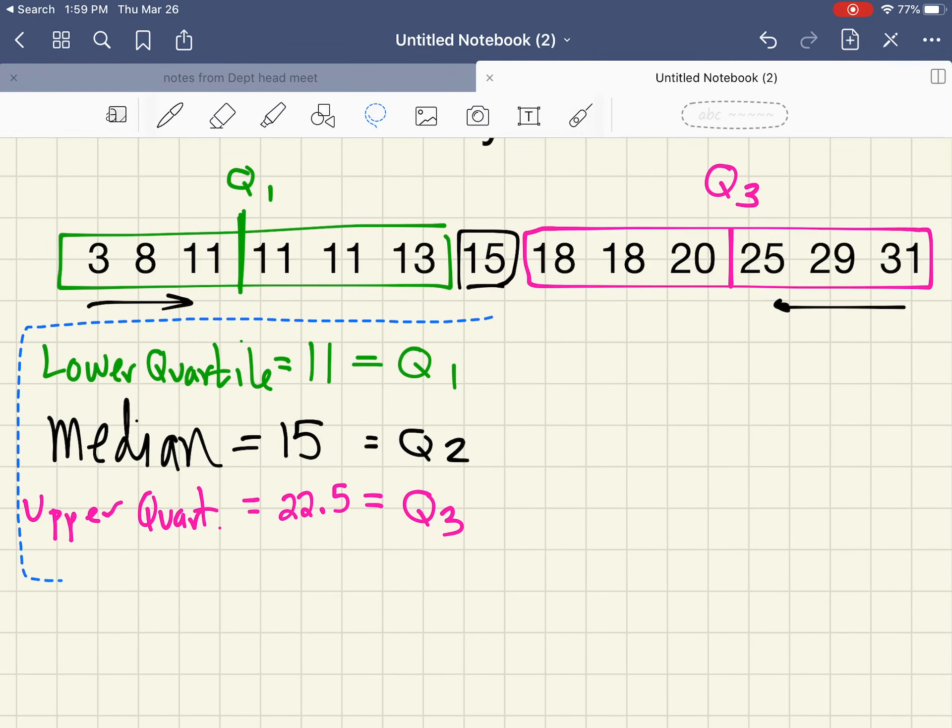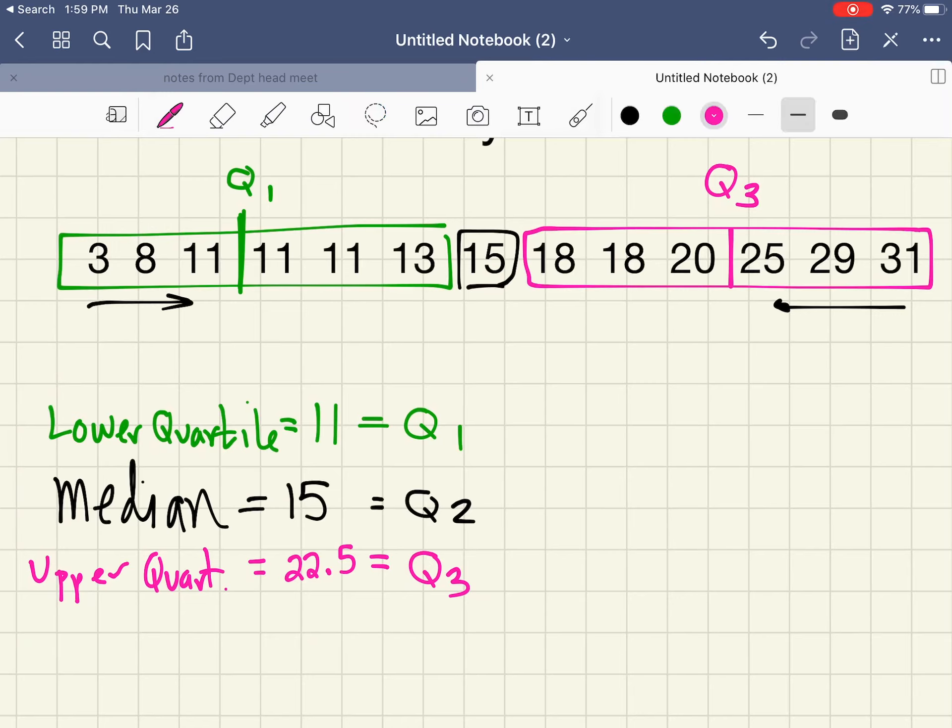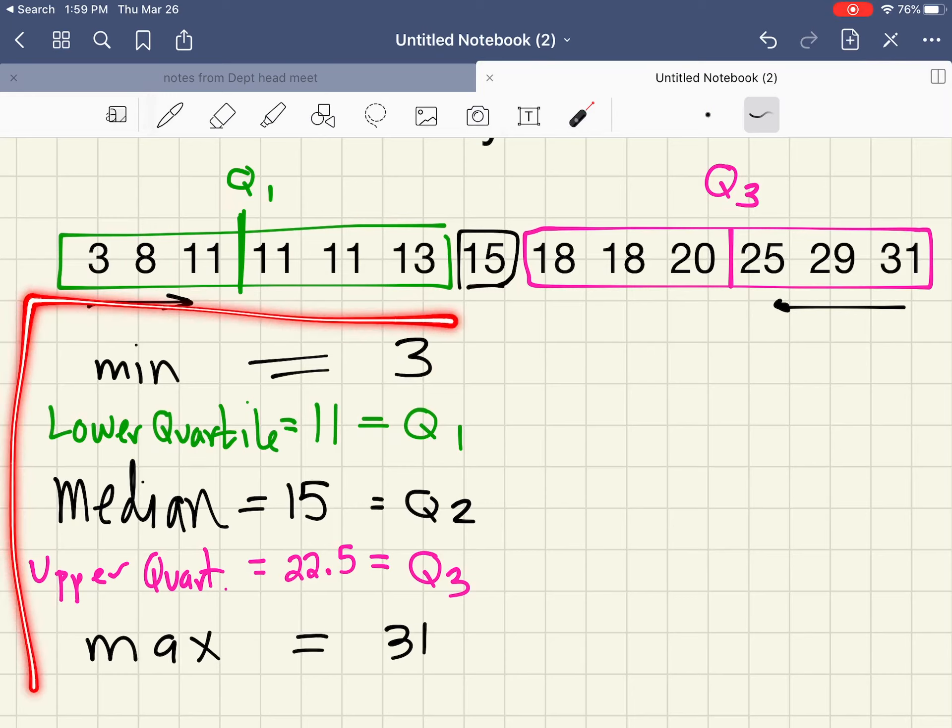Now we're just about done with the most complicated part. We're going to find the minimum value—the minimum value of the whole set is 3. We're going to find the maximum value, and that for this set is 31. This is actually our five-number summary. The five-number summary is pretty easy to find, and you need it in order to create a box plot.